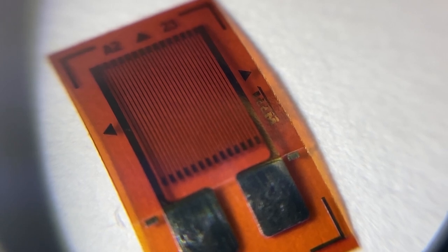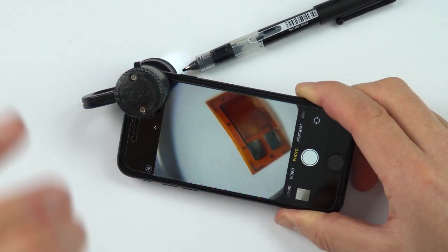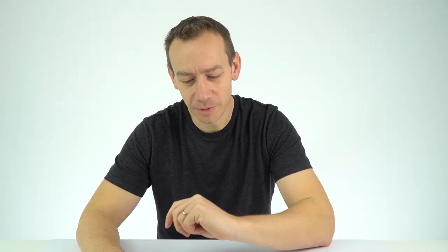As we glue this strain gauge onto a bigger component, as the component changes shape it's going to pull and stretch that wire.